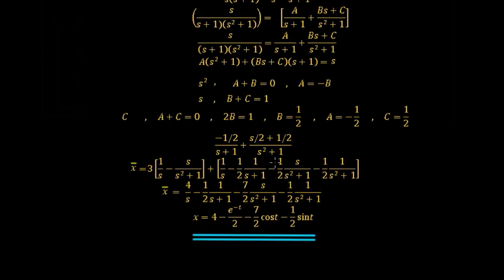Gathering all terms together: x̄ = 3[1/s − s/(s² + 1)] + 1/s − (1/2)·1/(s + 1) − (1/2)·s/(s² + 1) − (1/2)·1/(s² + 1). Collecting like terms gives 4/s − (1/2)·1/(s + 1) − (7/2)·s/(s² + 1) − (1/2)·1/(s² + 1). Taking the inverse Laplace transform gives x = 4 − e^(−t)/2 − (7/2)cos(t) − (1/2)sin(t).